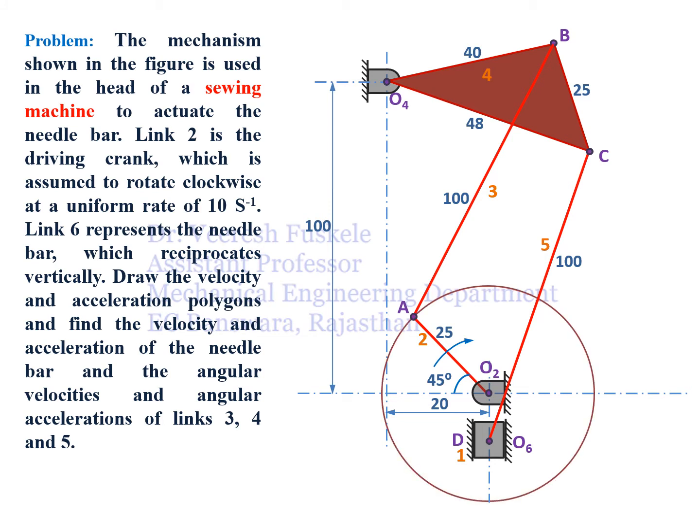Link O2A is a crank which is rotating in the clockwise direction, and this link OA is connected to the ternary link at point B with the help of link AB. Further, the ternary link is connected to the slider — the needle bar D — with link CD. The slider moves in the vertical direction so the needle moves up and down. This is the configuration diagram.